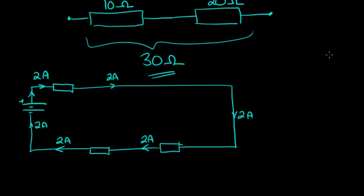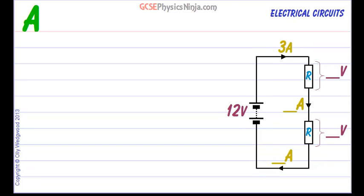Now, the last thing is to do with how the voltage of the cell or the battery, how that is divided up amongst the resistances. And the basic law is that it will divide up, it will be shared between these two resistances in the ratio of their resistance.